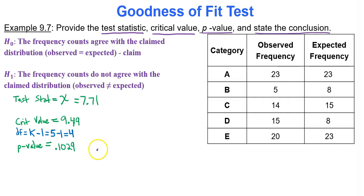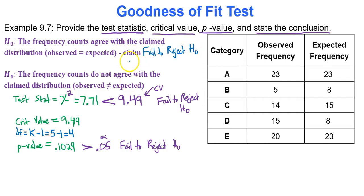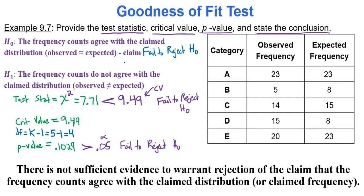The easiest way to form a conclusion is to compare the p-value to alpha. The p-value of 0.1029 is clearly greater than alpha, so we fail to reject the null. You should get the same result comparing the test statistic 7.71 to the critical value 9.49 — since the test statistic is less than the critical value, that also means fail to reject H0. There is not sufficient evidence to warrant rejection of the claim that the frequency counts agree with the claimed distribution.